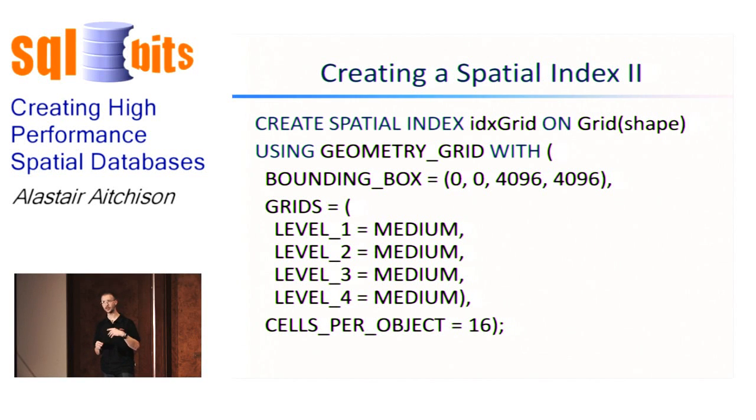It's worth mentioning, if you're using the geography data type, you don't need to specify a bounding box. In fact, you can't specify a bounding box. Because the geography data type works on a globe, the bounding box is implicitly assumed to cover the complete globe. You can't index only a portion of that globe. But with the geometry data type, which operates on a flat plane which potentially extends to infinity in every dimension, you must specify the bounding box.